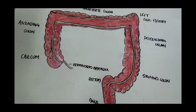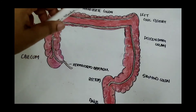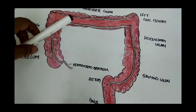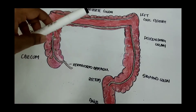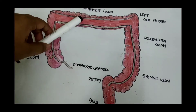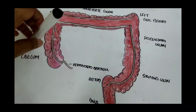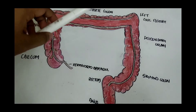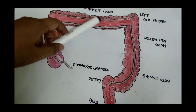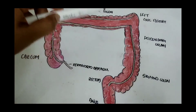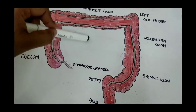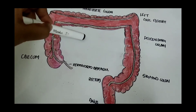The blood supply to the large intestine is derived from the marginal artery of Drummond.